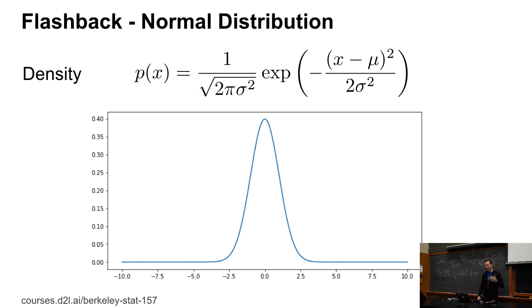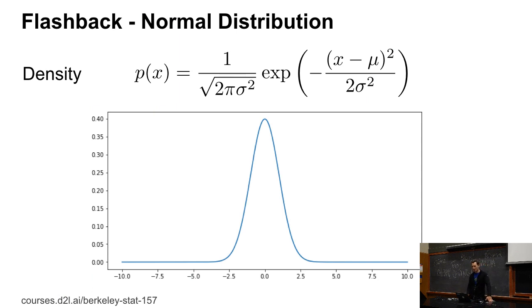Remember, this is our normal distribution. It's p(x) = 1 over sqrt(2π σ²) · exp(−(x − μ)² / 2σ²). And that's what it looks like.